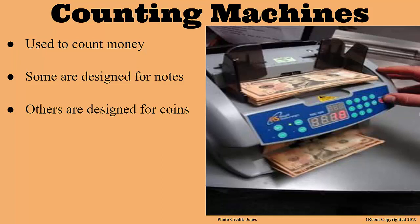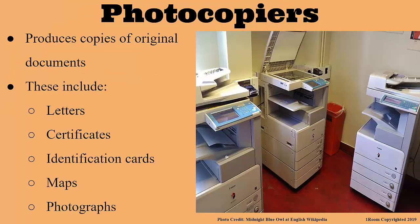Our next category is the reprographic machines, which means machines that are used to make copies or duplicates of documents. That's much simpler. So we are talking about printing, photocopying, and so on. Yes, then we can count photocopying machines as one of this equipment. Correct — call them photocopiers. It produces copies of original documents, which may be letters, certificates, pages of books, and so on.